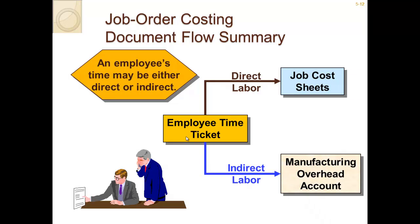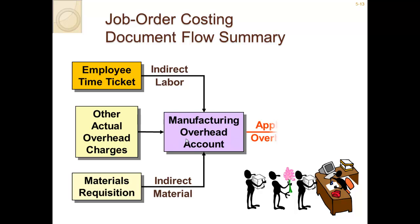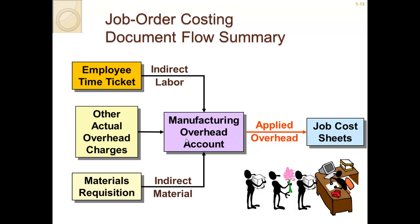An employee's time can be direct or indirect. If you're working directly on a Boeing aircraft, that is direct labor. But if you're a salaried employee managing multiple employees across different projects, you would be indirect labor and therefore part of the manufacturing overhead account. Inside manufacturing overhead, we also have other actual overhead charges: depreciation, factory utilities, indirect labor, and indirect materials — all of which add up to calculate manufacturing overhead.